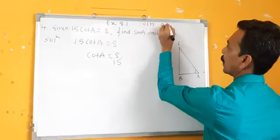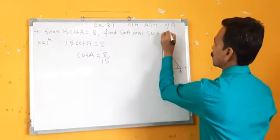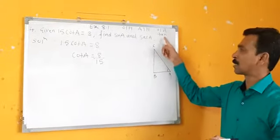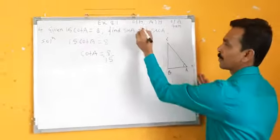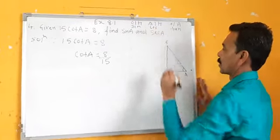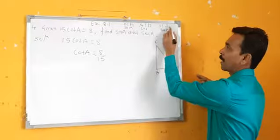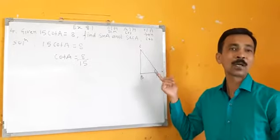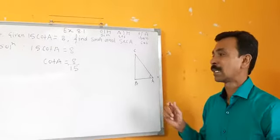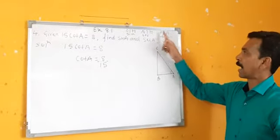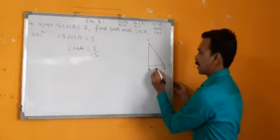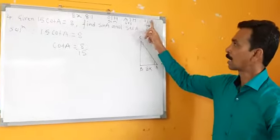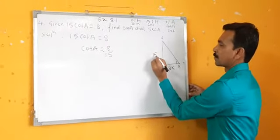Referring to the mnemonic — this is tan. If opposite by adjacent means tan, what will be cot? Cot will be adjacent upon opposite, because cot is the reciprocal of tan. Cot A equals adjacent upon opposite. Adjacent means AB, so here it will be 8K upon opposite, which is 15K.